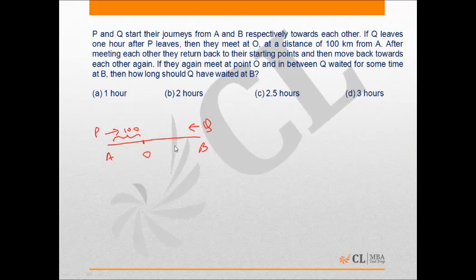After meeting each other, they return back to the starting points and then move back towards each other again. If they meet at point O again and in between Q waited for some time at B, then how long should Q have waited at B?